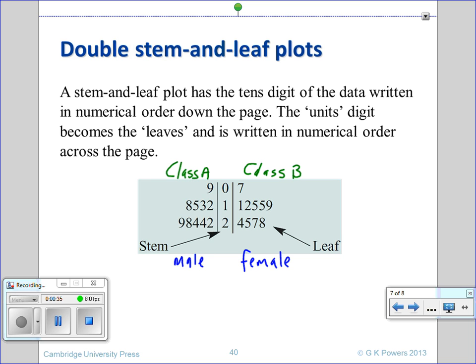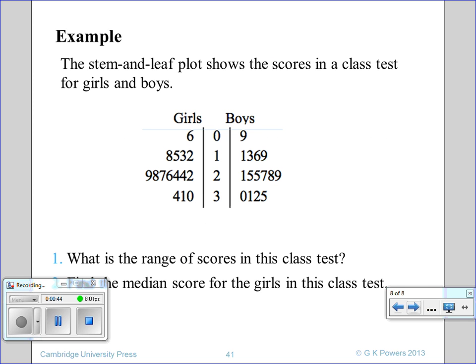Or it could be dogs and cats - it doesn't really matter. It's showing two sets of data on one graph, which is a really good way of making judgments about it. So here's an example: one class test, boys and girls.